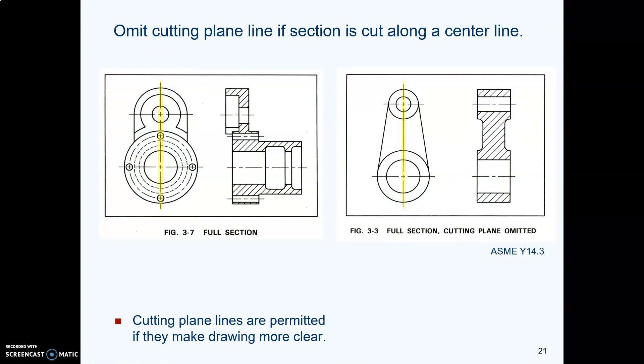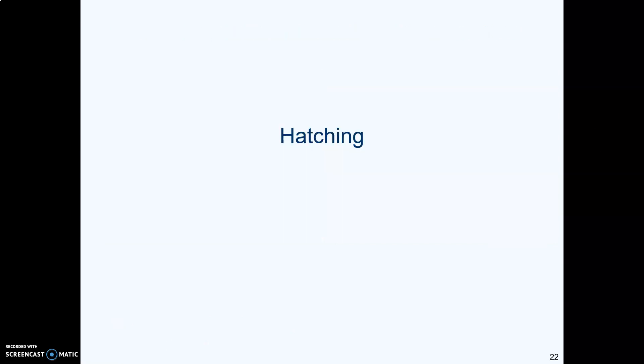Now ASME says if you are sectioning a part along a center line, you do not need a cutting plane line, which is a good thing about the drawing we're going to be doing today. It, like these ASME examples, is cut along a center line. So therefore we do not need a cutting plane line or an arrow. The center line is the cutting plane line.